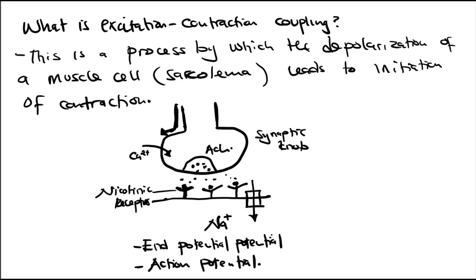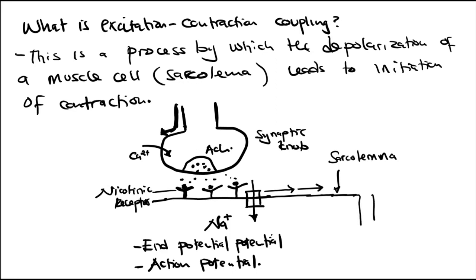Once the threshold stimulus is reached, an action potential is generated in the muscle cell and propagated through the sarcolemma — the cell membrane of a muscle cell. The sarcolemma has transverse tubules, or T-tubules, that lead into the sarcoplasm.